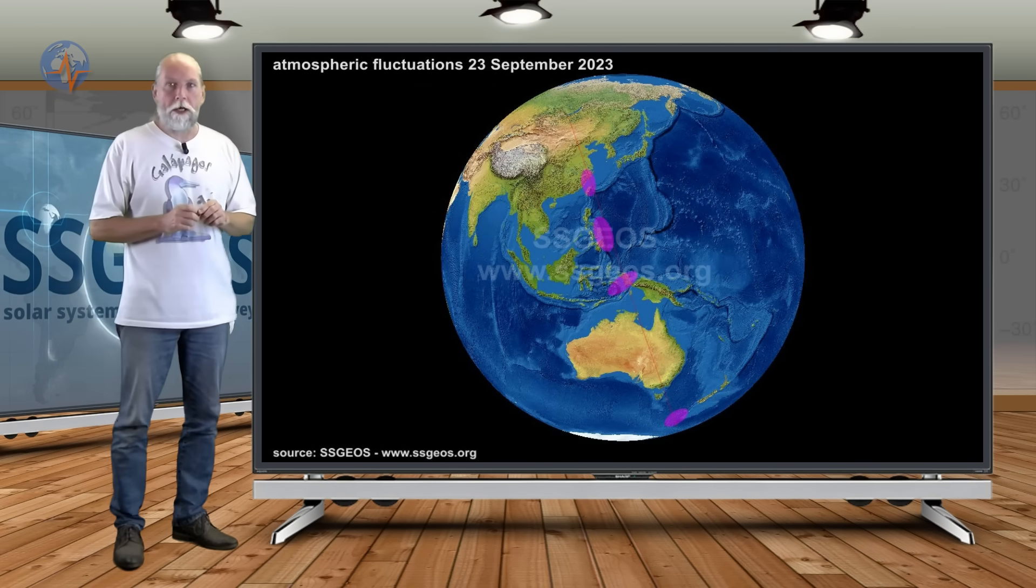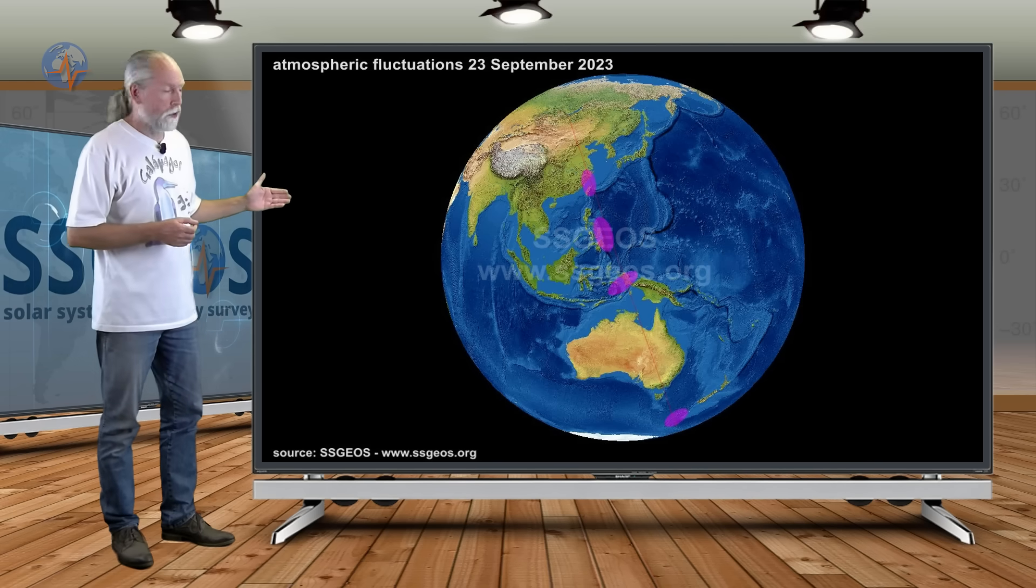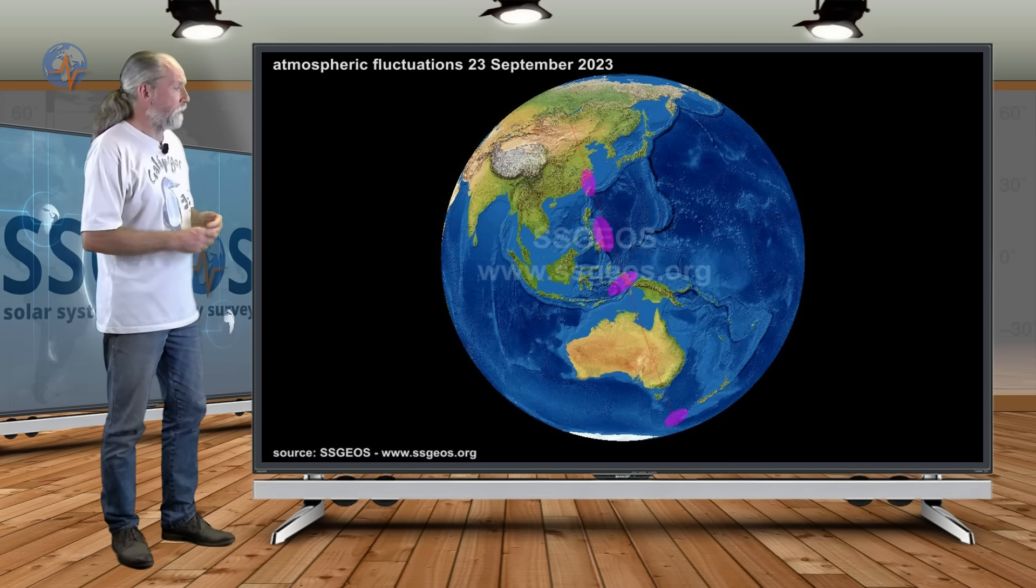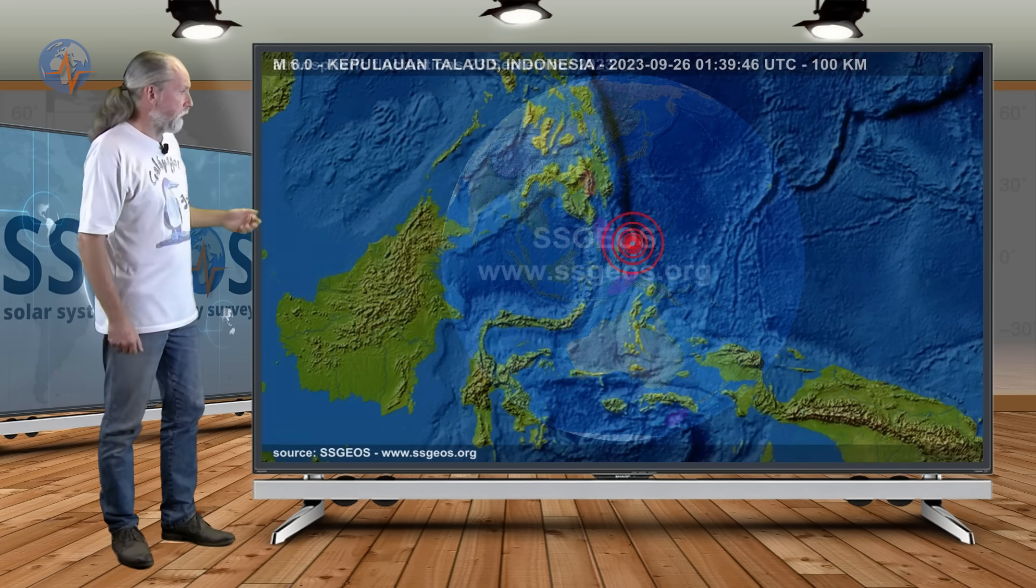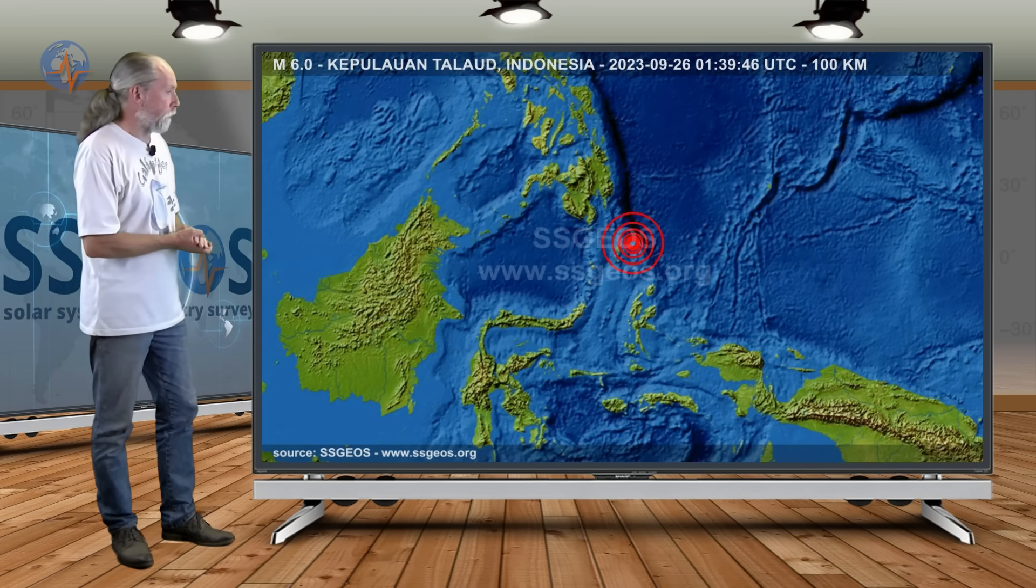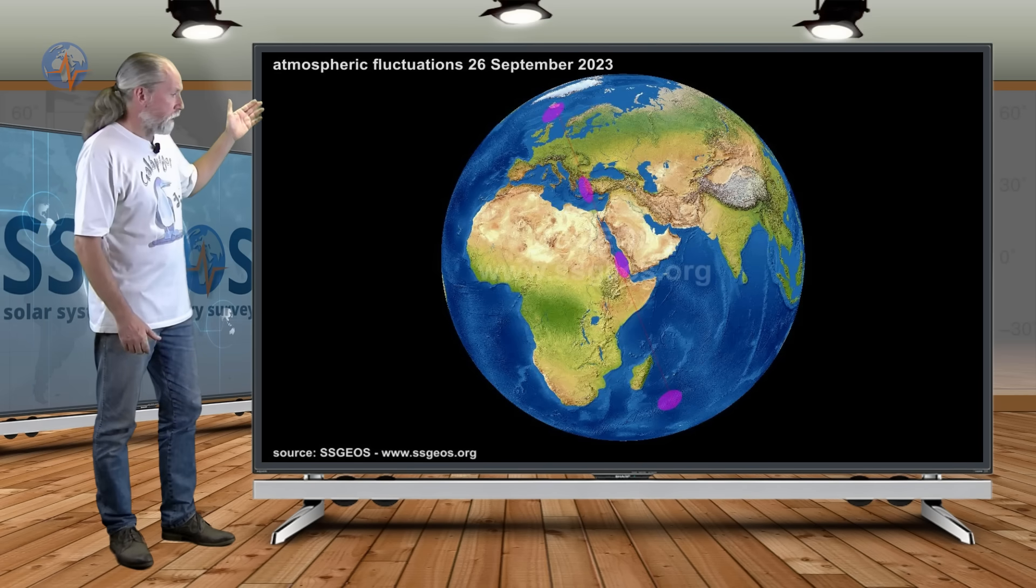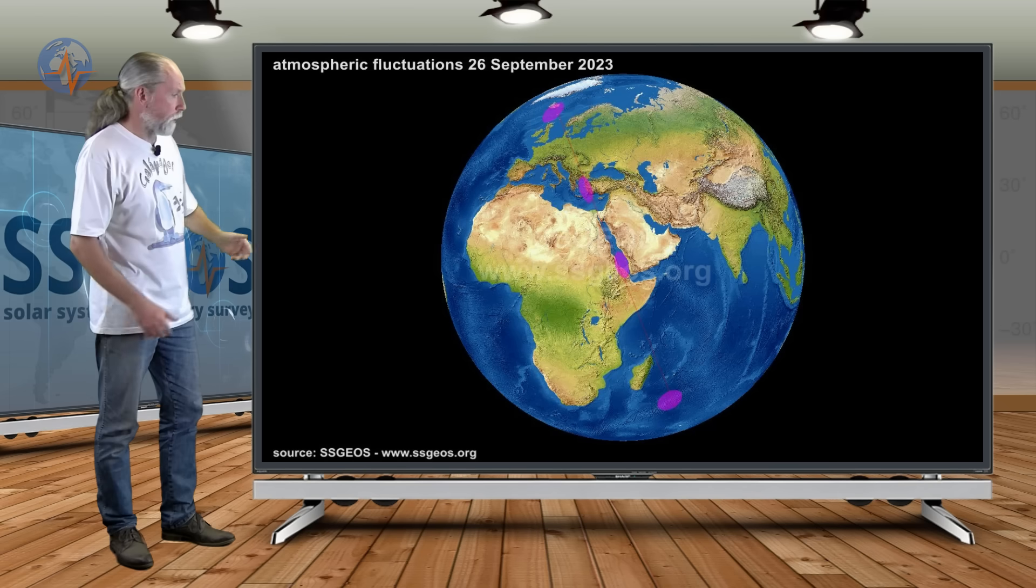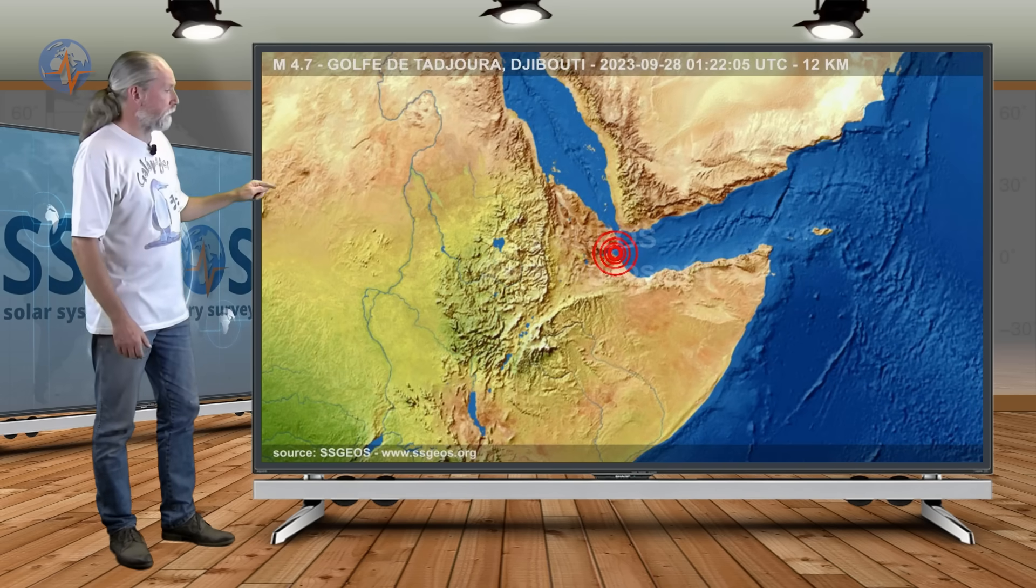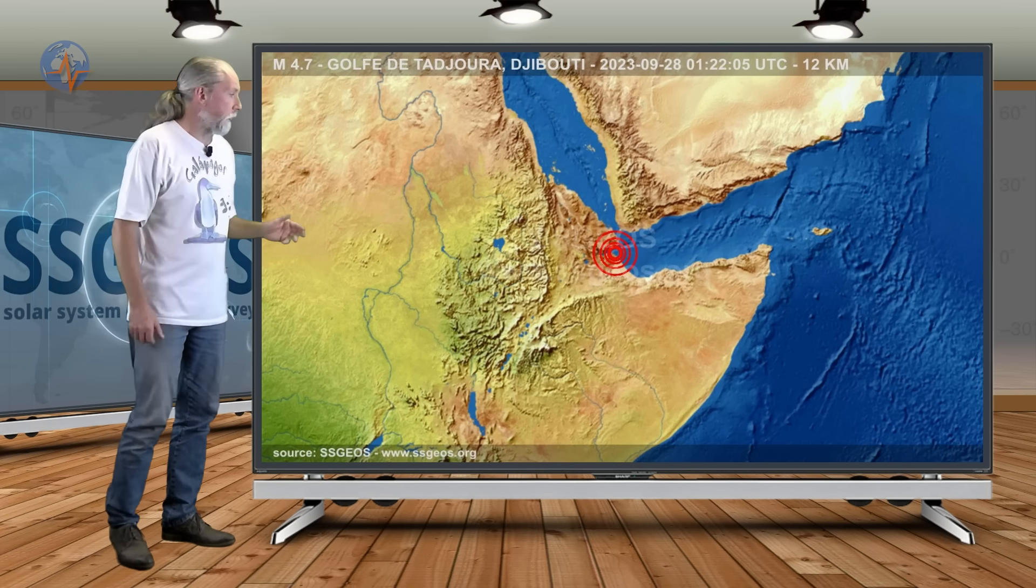Atmospheric fluctuations that we had, we had them on the 23rd and on the 26th. I already showed you these fluctuations and they resulted in some seismic activity, like the six pointer in Indonesia right along that line. And also a weak fluctuation on the 26th that we had, marking regions from Iceland in the north down to Madagascar in the south, going along the eastern part of the Arabian Plate. Two days later we had this moderate seismic event, a 4.7 borderline 5 in Djibouti.